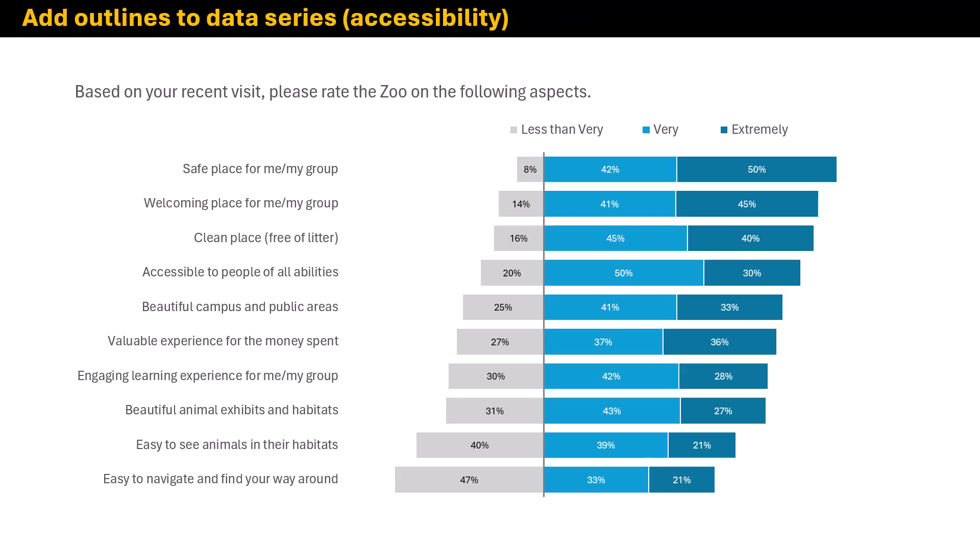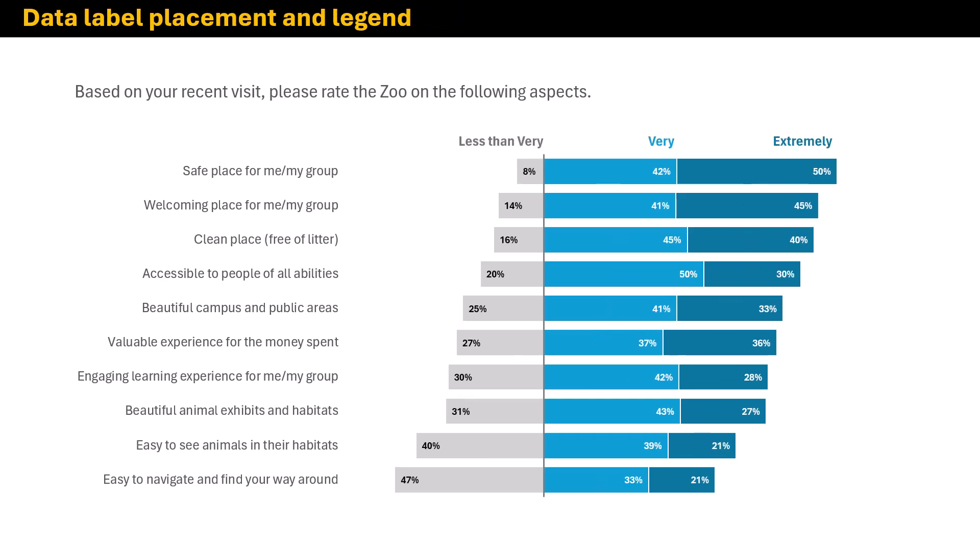There are a couple other design things we can do to make this even more effective. I'm going to add white border lines to each of the data series, because if we're printing or viewing in grayscale, I want a clear delineation between each of the three buckets. I'm also going to adjust the positioning of the labels inside the bars so they follow the diverging pattern — the less-than-very labels on the outer ends, and the very and extremely labels on the right ends. I also made these bold, and replaced the standard legend with my own text boxes on top of the chart for a cleaner design effect.